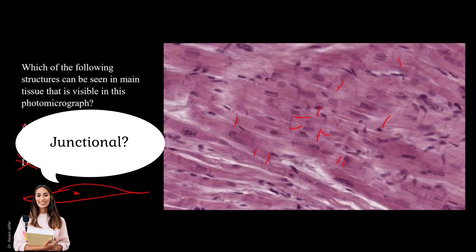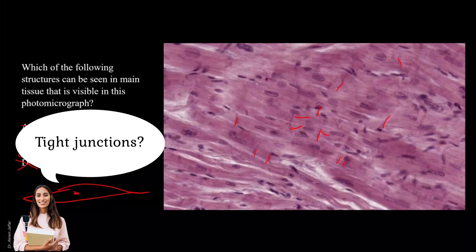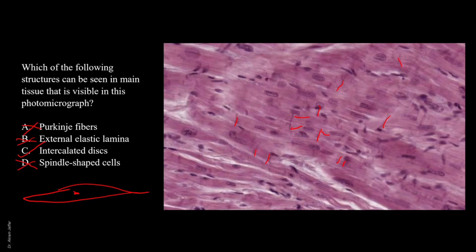Yes, junctional complexes. And what specific type of junction would be seen here? Gap junctions. The cardiac muscle fibers contract as a network because they are connected through these gap junctions. There are also desmosomes to prevent separation between cells during contractile activities. So desmosomes and gap junctions — that's why they are called junctional complexes.